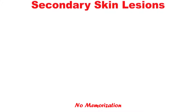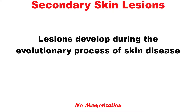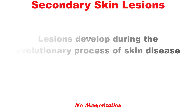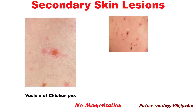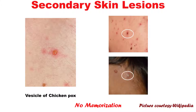First of all, what do we mean by secondary skin lesions? Unlike primary skin lesions, this develops during the evolutionary process of skin disease, such as rubbing, scratching, and infection. For example, chickenpox. It starts with a vesicle, which is a primary skin lesion. Over time, either it will heal or get infected. Then the name of the lesion will not be vesicle — it will be something else. That's what we are going to learn today.